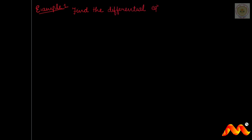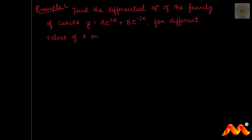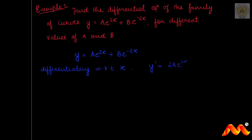Let's work through the following example for better understanding. Find the differential equation of the family of curves y = a·e^(2x) + b·e^(−2x), for different values of a and b. Given equation 1: y = a·e^(2x) + b·e^(−2x). Differentiating with respect to x: y' = 2a·e^(2x) − 2b·e^(−2x).